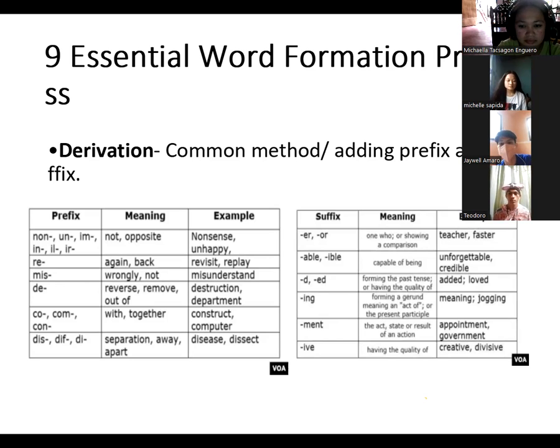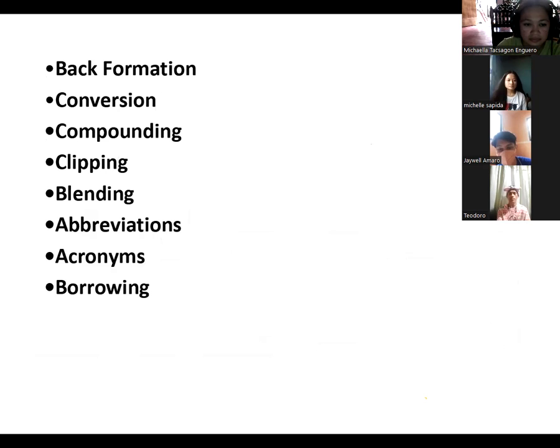Next is back formation. While derivation is adding prefix and suffix, back formation is the removal or the reducing of affixes. For example, the word television, when we remove the suffix ion, it will become televise. And that's what we call back formation.